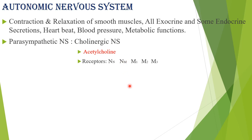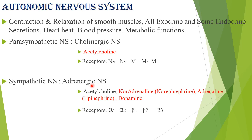When acetylcholine is secreted, it binds with the Nm receptor at the neuromuscular junction, causing muscle contraction. This contraction is necessary for any movement — walking, holding things, using your limbs. Without muscle contraction you cannot do anything. So the neurotransmitter responsible for skeletal muscle contraction is acetylcholine.